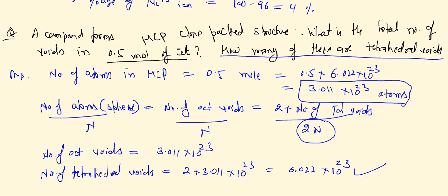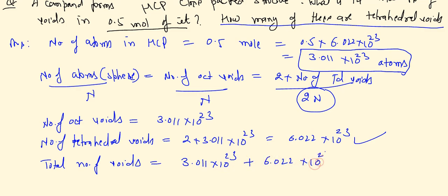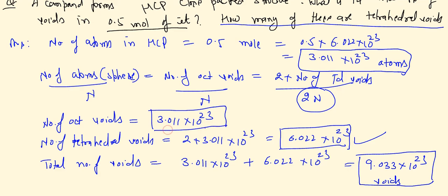Total number of voids = octahedral + tetrahedral = 3.011 × 10²³ + 6.022 × 10²³ = 9.033 × 10²³ voids. Of these, 6.022 × 10²³ are tetrahedral voids and 3.011 × 10²³ are octahedral voids.